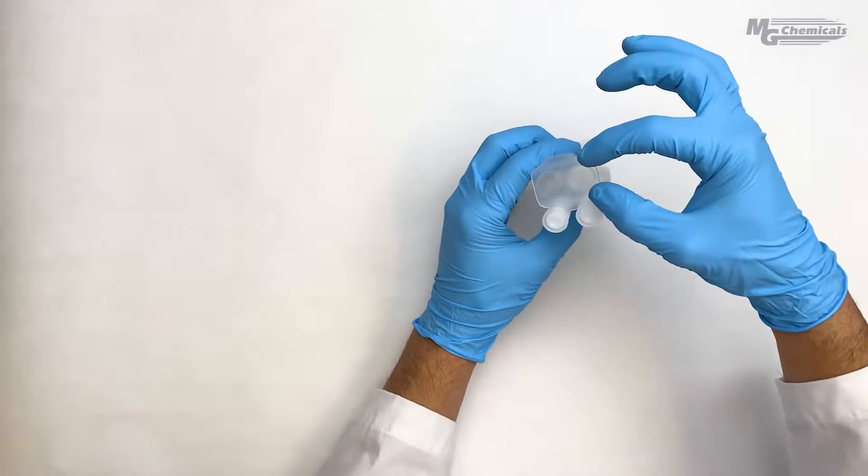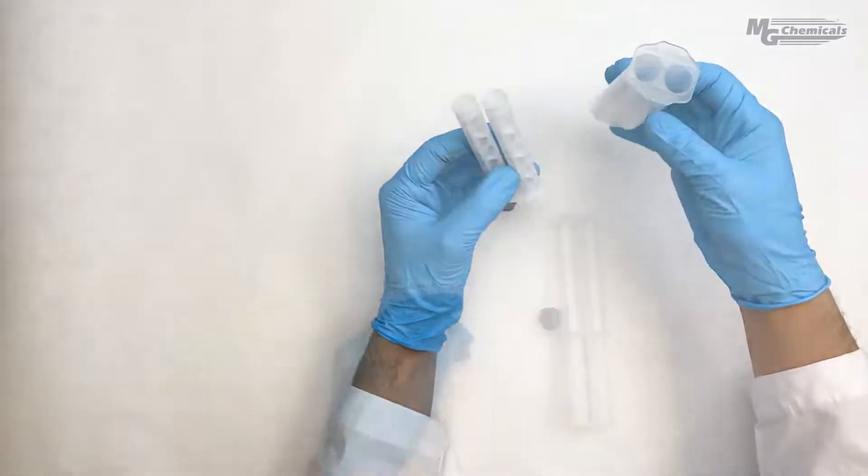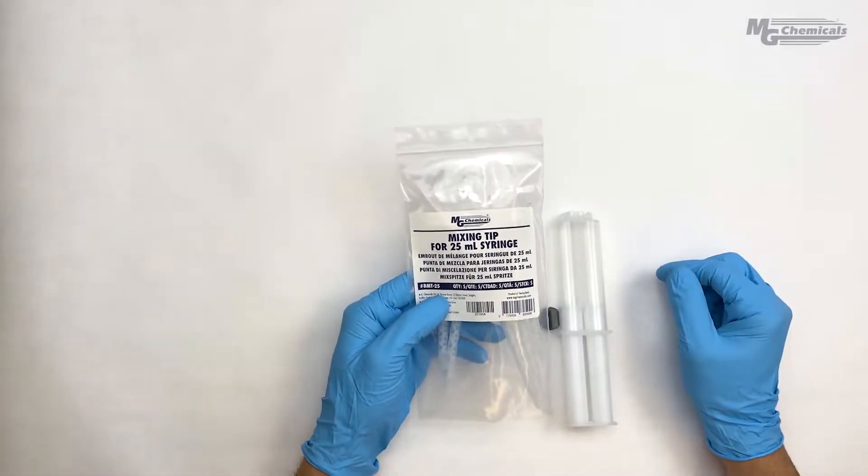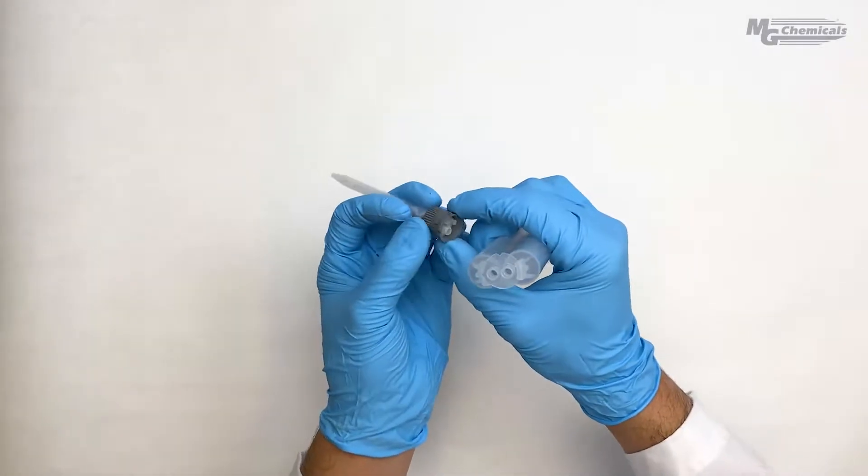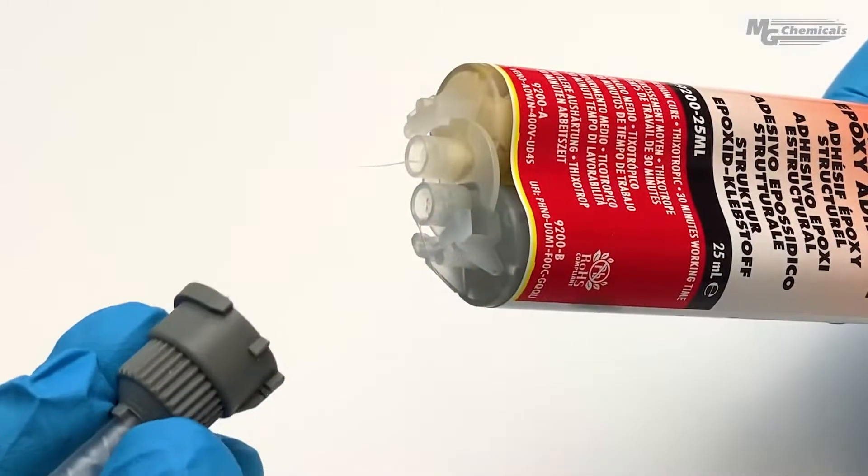On the other end of the cartridge we have a plunger that dispenses parts A and B through the nozzle. We can easily attach mixing tips over the nozzles which mixes the two components together as we dispense.